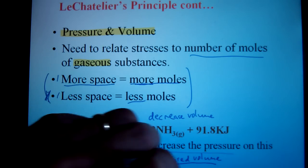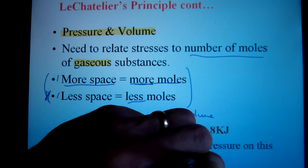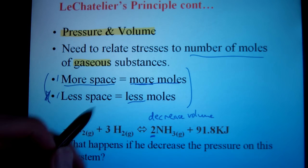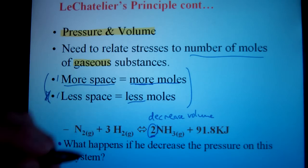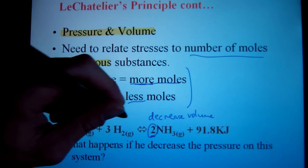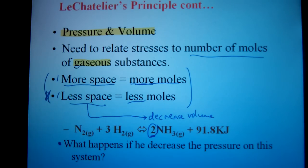Back to the original question, I wanted to make more ammonia. If I want to shift to the right, that means I want to shift to the side with fewer moles. Fewer moles requires less space or less volume. So if I want this scenario, I'm going to have to decrease the volume of this system.